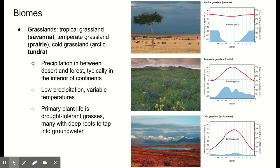Grasslands are separated into three varieties: tropical grasslands we call savanna (like southern Africa), temperate grasslands also called prairie (like the Great Plains of the United States or the steppes in Russia), and the coldest grasslands called Arctic tundra. Grasslands have a little more precipitation than deserts but not enough to be a forest — trees are water-intensive and there's just not enough rainfall to support them. Primary plant life is drought-tolerant grasses, which typically have deep roots to tap into groundwater.